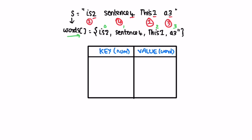We iterate through the words array from left to right. In each iteration we access the last character in each word and add it as the key. The last characters are 2, 4, 1, and 3 respectively. We use a LinkedHashMap to maintain the order of insertion, and we extract the respective word using a substring. So the second word is 'is', the fourth is 'sentence', the first is 'this', and the third is 'array'. Now we have the HashMap ready.